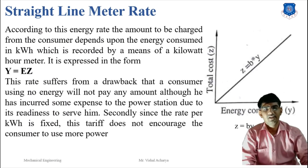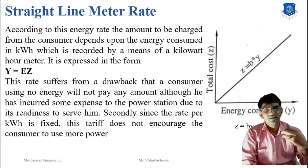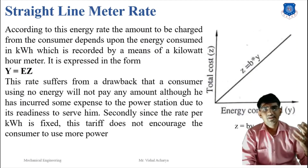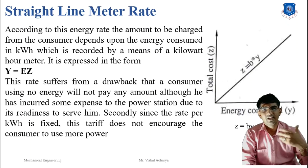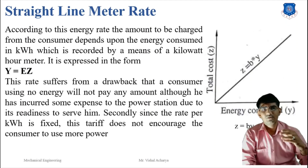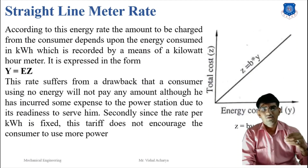Next is the straight line meter rate. According to this rate, the amount to be charged from the consumer depends upon the energy consumed in kilowatt-hours, recorded by means of a kilowatt-hour meter. The cost increases as energy consumption increases. A drawback is that a consumer using no energy will pay nothing, yet the power station still incurs expenses due to readiness to serve. The rate per kilowatt-hour is fixed, so the tariff does not encourage consumers to use more power.